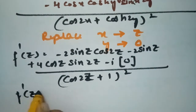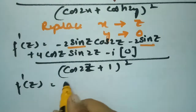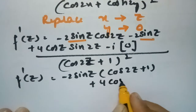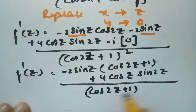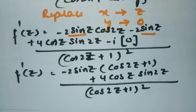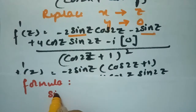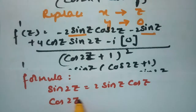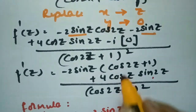Taking −2sin(z) common, f'(z) = −2sin(z)·[cos(2z) + 1 + ... ] + 4cos(z)·sin(2z), all divided by (cos(2z) + 1)². Now I use the trigonometric identities: sin(2z) = 2sin(z)cos(z) and cos(2z) = 2cos²(z) − 1.